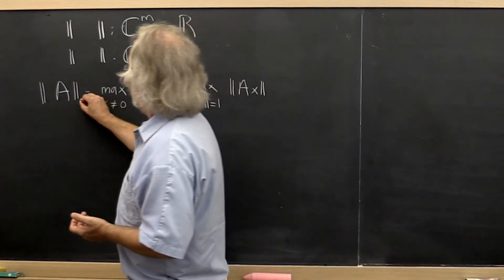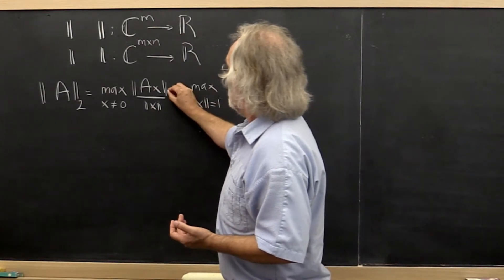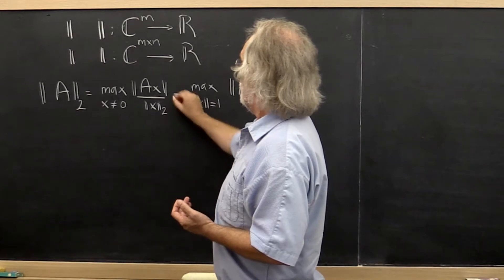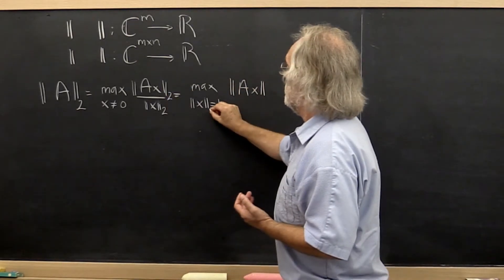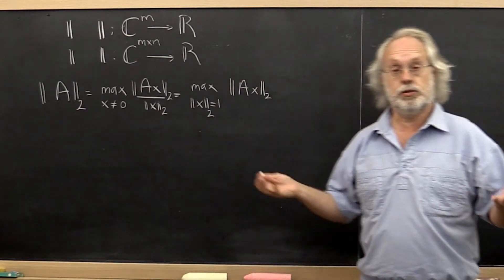So the matrix 2-norm is the case where to measure the input vector we use the 2-norm, to measure the output vector we use the 2-norm. And that's all there is to it.